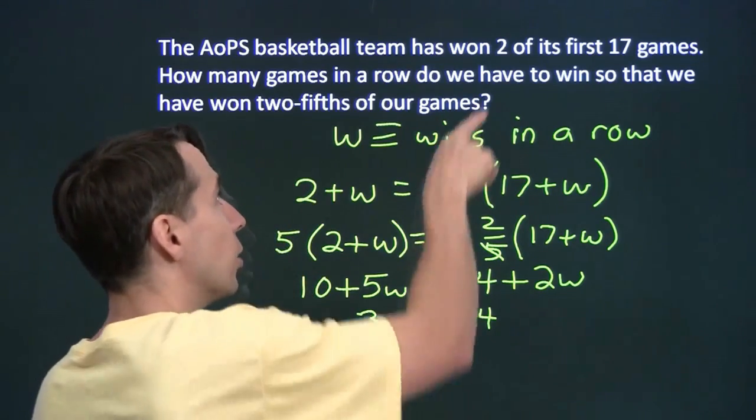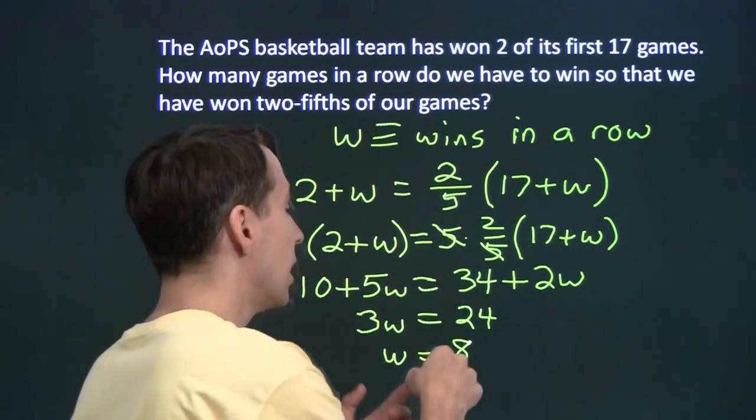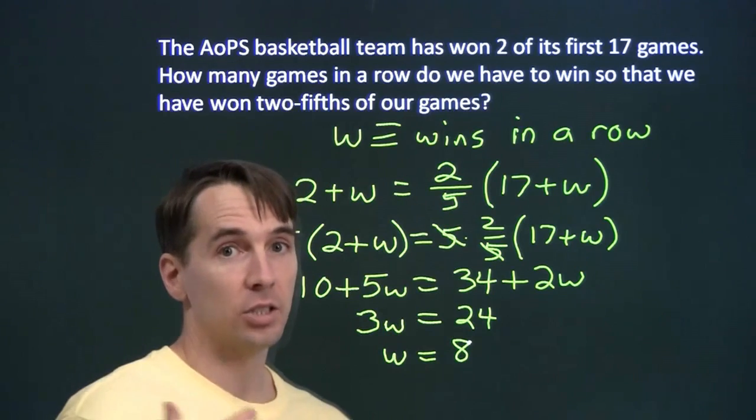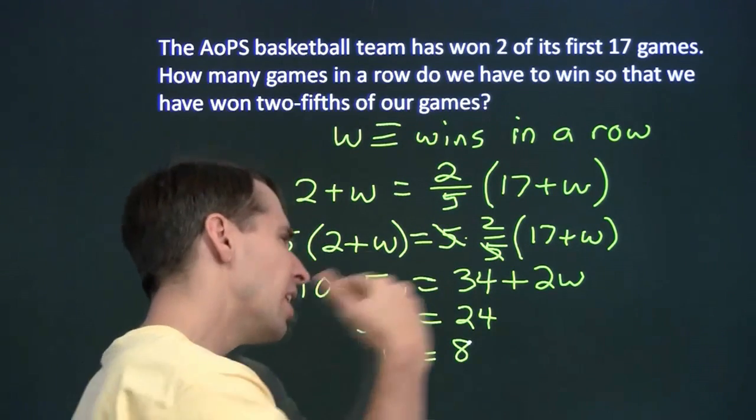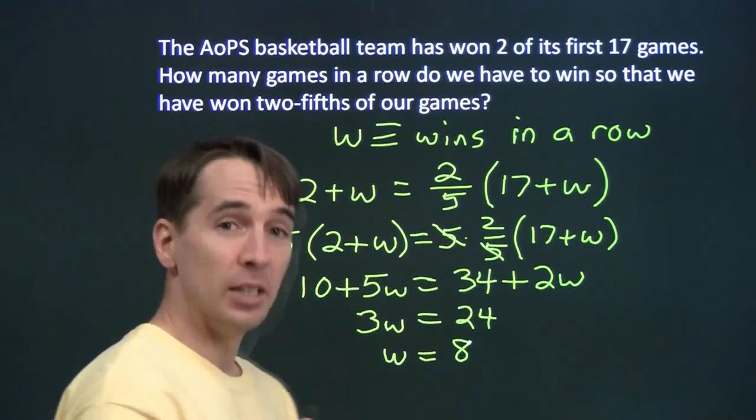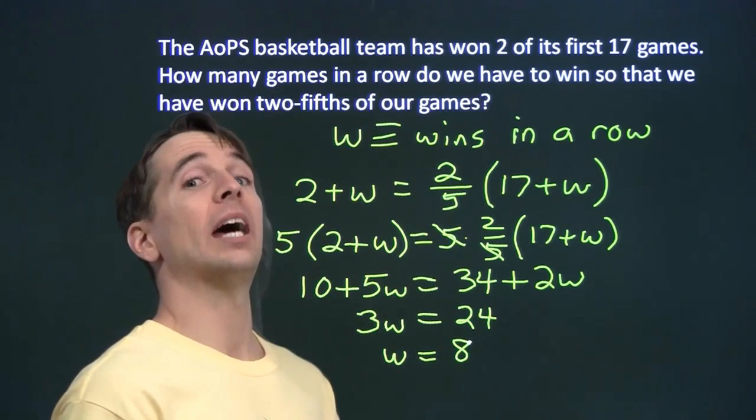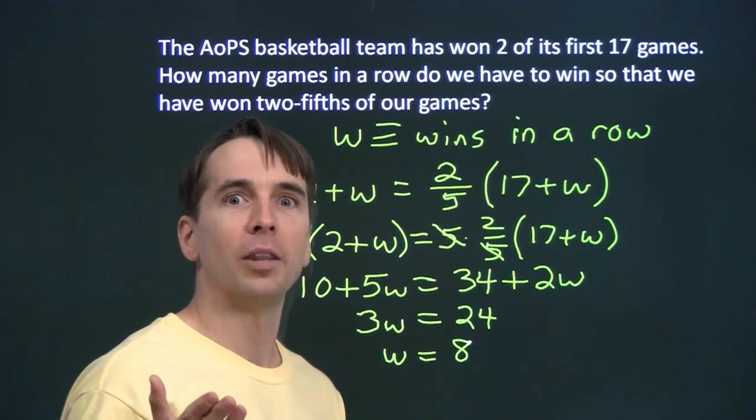And just to check that answer, if we win 8 in a row, we'll have 10 wins. And we'll have played 17 plus 8 is 25 games. 10 out of 25? That's two-fifths of our games, and we'll be respectable. So all we have to do now is hire some tall mathematicians.